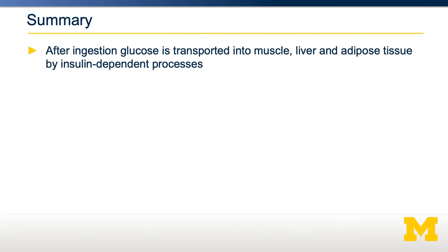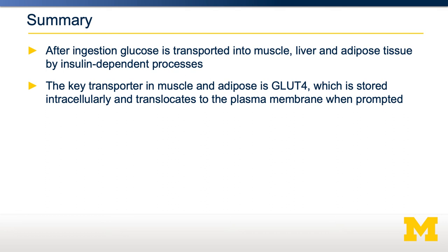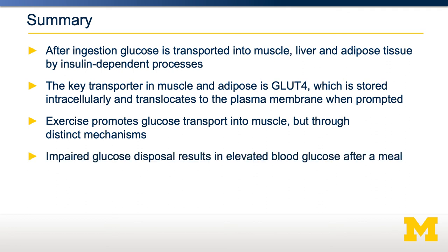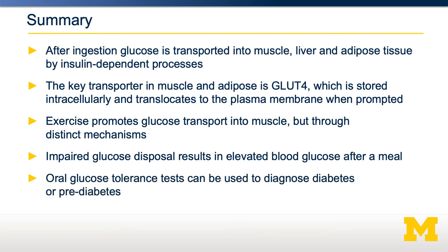In summary, after ingestion, glucose is transported from the blood into muscle, liver, and adipose tissue by insulin-dependent processes. The key transporter for muscle and adipose tissue is GLUT4, which is normally sequestered inside the cell but can translocate to the plasma membrane upon proper stimuli. Exercise, as well as insulin, can promote glucose transport into muscle, but they have distinct mechanisms for promoting GLUT4 translocation. This can be leveraged to use exercise to control blood glucose even when insulin action is impaired. Impaired glucose disposal results in elevated blood glucose after a meal, which can be diagnosed by an oral glucose tolerance test with established cutoffs for diabetes and prediabetes.